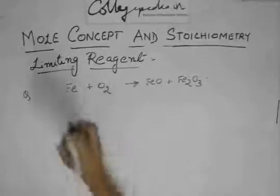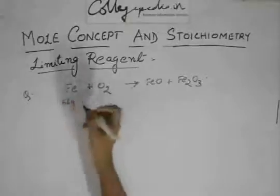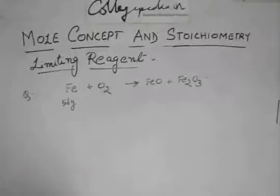And you are given 56 grams of iron. So what you have to find is the weight of oxygen which would fully consume this 56 grams of iron.